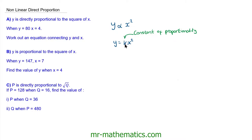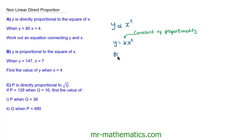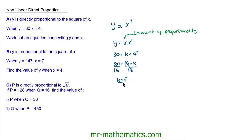We need to begin by working out the value of k, and we can do this because we've been given a matching pair of y and x. So we can substitute these into our equation. We can say that y, which is 80, is equal to k times x squared, and x is 4, so 4 squared. We can work out 4 squared as 16, so 80 is equal to 16 multiplied by k. Now if we divide both sides by 16 these will cancel, and we're left with k is equal to 5.